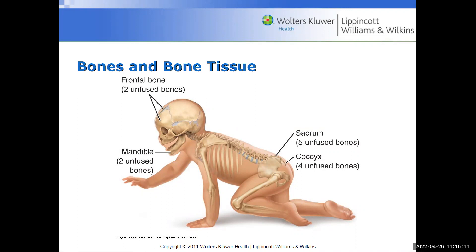Another important thing about fontanelles is in terms of vaginal delivery. Why is it important to have these fontanelles for vaginal delivery? It makes the head flexible to come through the passage. Some babies have big heads — if these bones were fixed, we'd be talking about vaginal tearing. The skull is literally deformed as it comes through the vaginal passage, but it does pop back into place after delivery.